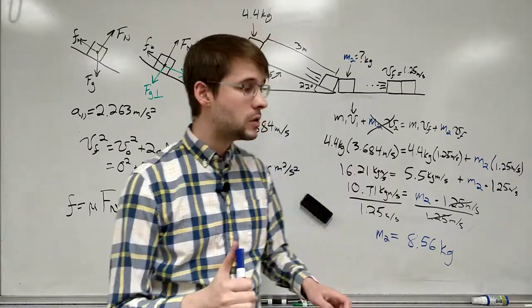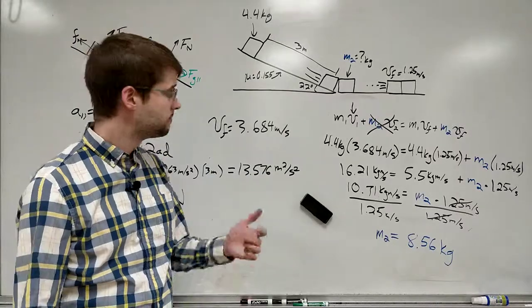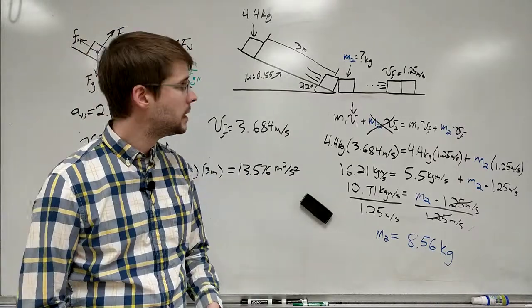We set that equal to one half mv squared, and we can calculate for the velocity. If you do it this way and do everything right, you should get the exact same final velocity. There are two different ways to do this same problem, but that's how we do it. It's two steps.